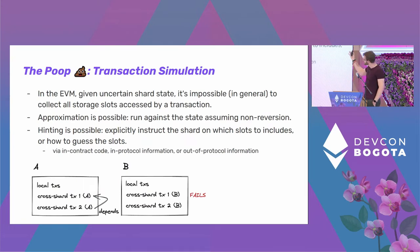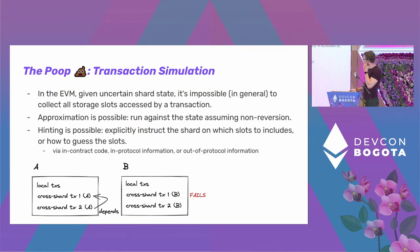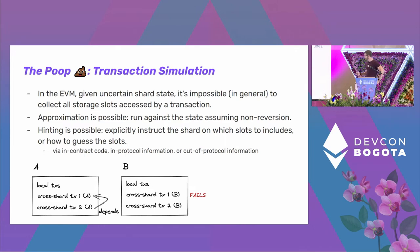This sounds too good, so where's the catch? The catch is that you need to simulate transactions on each shard individually. In general, with EVM you can't collect all storage slots accessed by a transaction without running it. The easiest approximation is to run the transaction against the current state assuming prior transactions don't revert — but maybe they will, making your simulation incorrect. Alternatively, you can tell the shard which slots a transaction will touch, using EVM code that touches the slots, in-protocol information, or even unvalidated out-of-protocol information sent to sequencers.